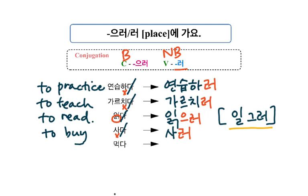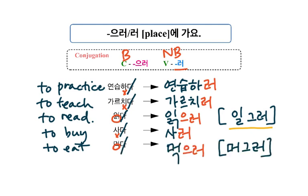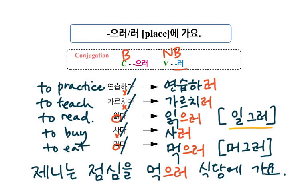The last one — 먹다, 'to eat.' There is 받침 before 다. Take out 다 and add 으러. 제니는 점심을 먹으러 식당에 가요. 제니는 왜 식당에 가요? 점심을 먹으러 — in order to eat lunch. 제니 goes to the restaurant to eat lunch.